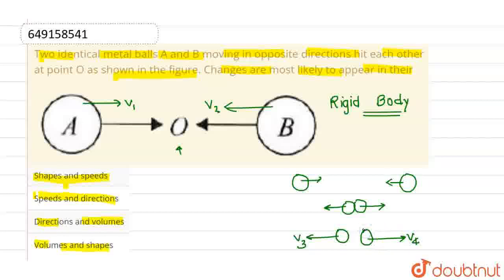So this is V3 and V4. Now the correct option is going to be asked if the question is what changes. Because these are metal balls and rigid bodies, we will say that the volume will not be changed and the shape will not be changed.